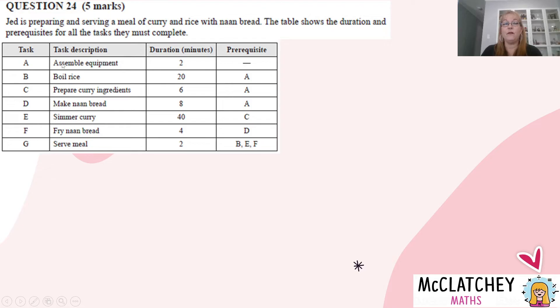If we have a quick look at what's involved, they're going to assemble some equipment, boil some rice, prepare curry ingredients, make the naan bread, simmer the curry, fry the naan bread, and then serve the meal. We've got our duration, which is the length of time each activity takes, and our prerequisites.